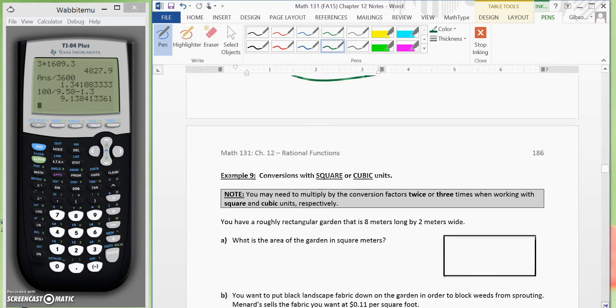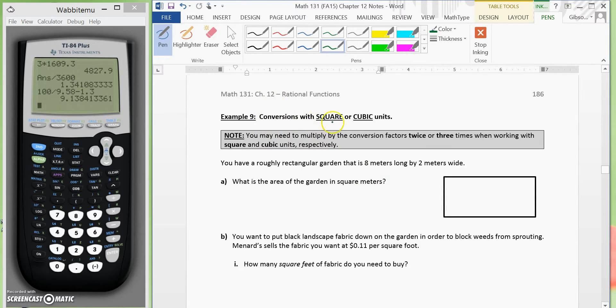Okay, now, we'll go to example 9. Conversions with square or cubic units. Note, you may need to multiply by the conversion factors twice or three times when working with square and cubic units, respectively. You have a roughly rectangular garden that is 8 meters long and 2 meters wide.